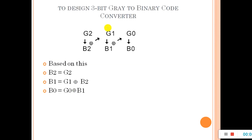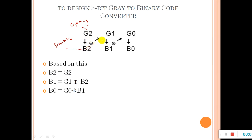Now let's design a three-bit gray to binary code converter. We have the gray code and need to change it into binary. The formula is also simple: keep the MSB as it is — so whatever G2 is, it will be B2. There is a slight difference from the previous method: here we take the previous binary bit and the next gray bit and XOR them. So B1 equals B2 XOR G1, and B0 equals B1 XOR G0.